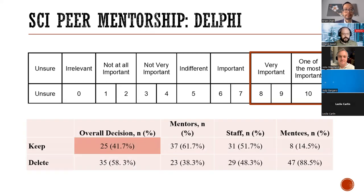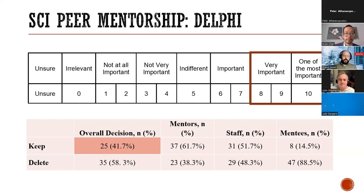An interesting finding was that mentors and staff rated more outcomes as meeting the importance threshold, while mentees rated only about eight as most important — likely because mentees rate their own individual experiences. Through discussion with our partnership, we decided to keep the overall perspective because mentors and staff have exposure to many individuals and many mentees, providing a broader view. We moved forward with those 25 outcomes as our global perspective.